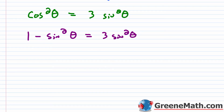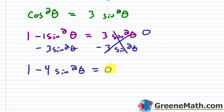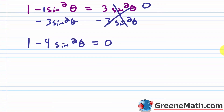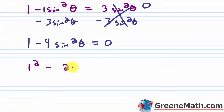Subtracting 3 sine squared theta from both sides: 1 minus 4 sine squared theta equals 0. Recognizing this as a difference of squares — rewriting as 1 squared minus (2 sine theta) squared equals 0 — we factor it as (1 plus 2 sine theta)(1 minus 2 sine theta) equals 0.